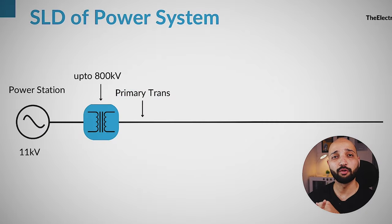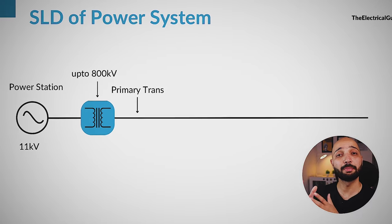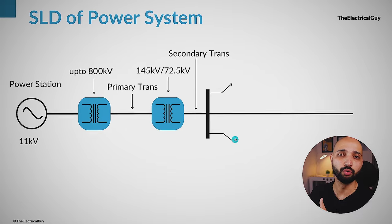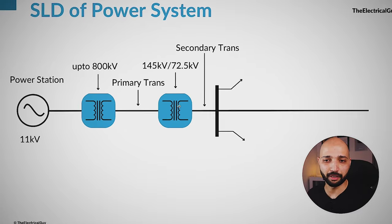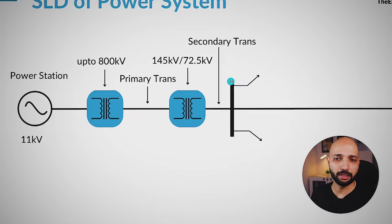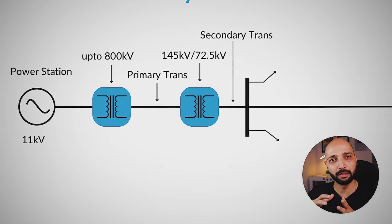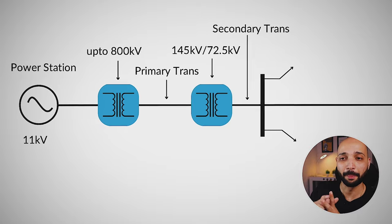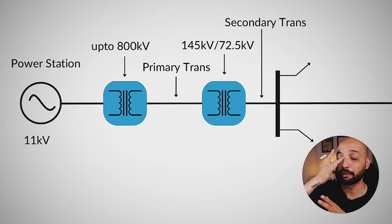Once the power reaches the receiving substation, it is stepped down to lower voltages — maybe 72.5kV. From here, power can also be supplied to some high-tension consumers who need 145kV or 72.5kV directly in their factory. Those consumers build their own step-down substation and take power from there.